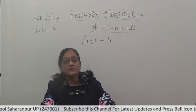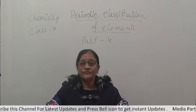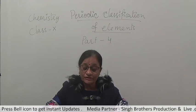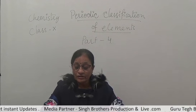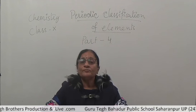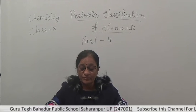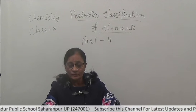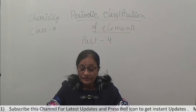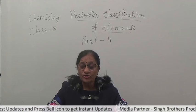Mendeleev had considered properties on the basis of atomic mass. After Mendeleev, mostly in the year 1913, Moseley formed the modern periodic law. According to that law, the properties of elements are a periodic function of their atomic number. When atomic number was discovered and calculated, Moseley gave the modern periodic law stating that the properties of elements are a periodic function of their atomic number.